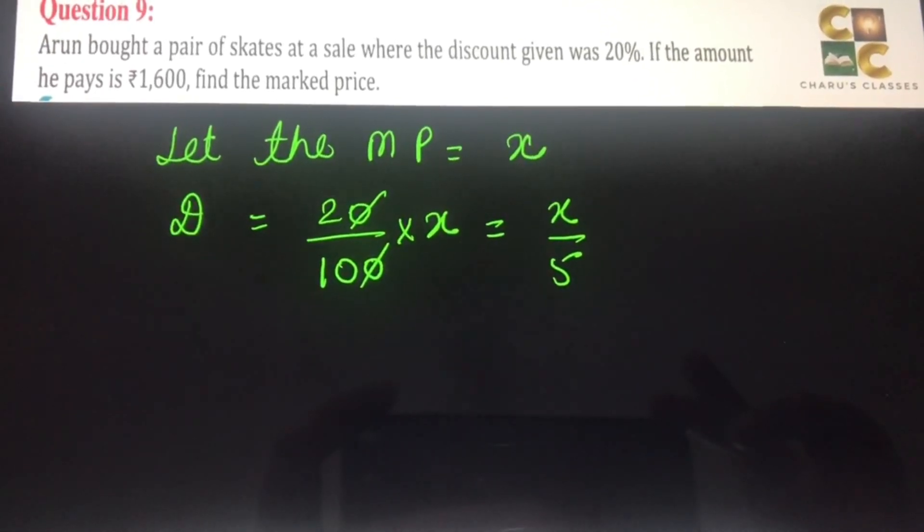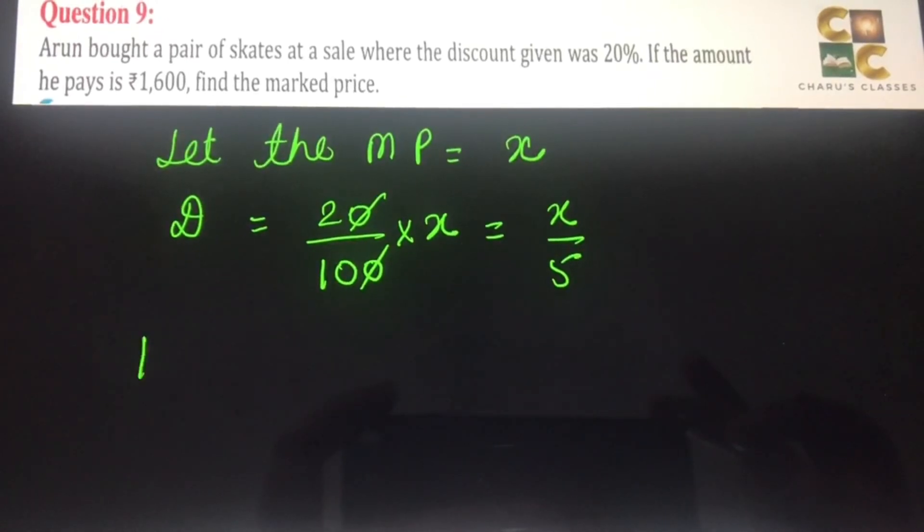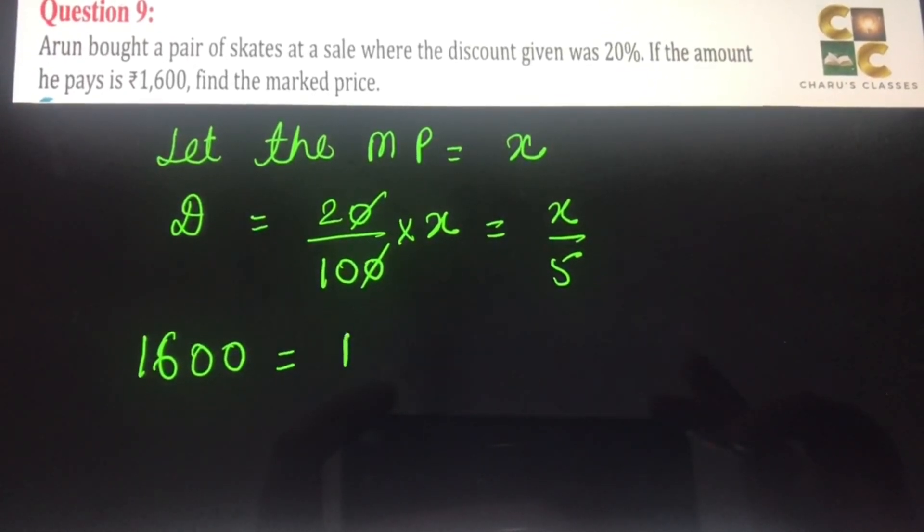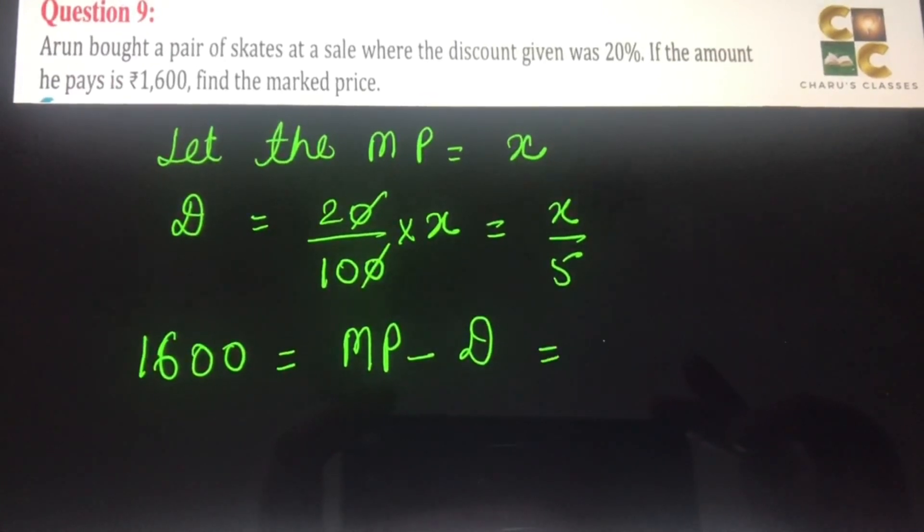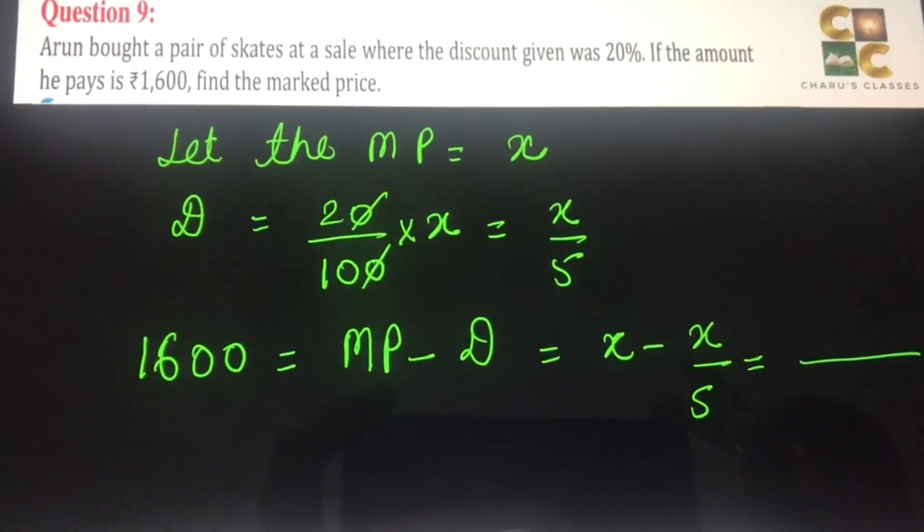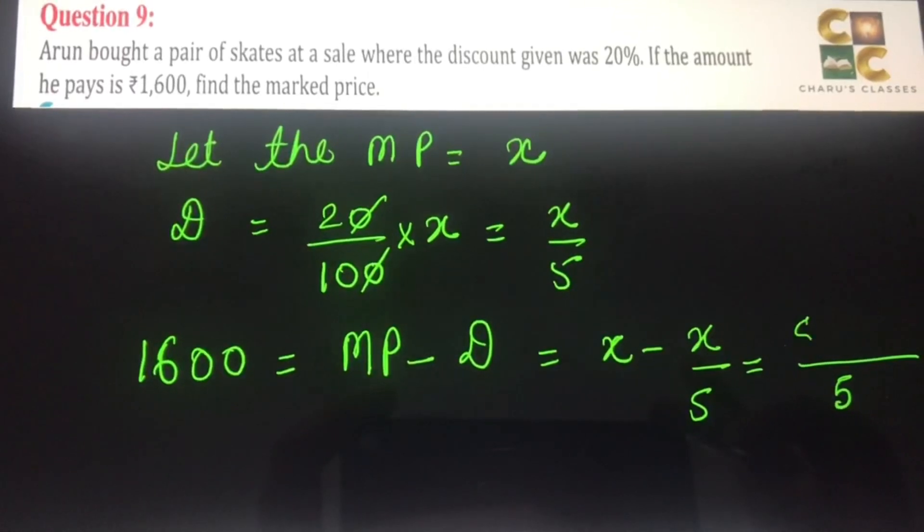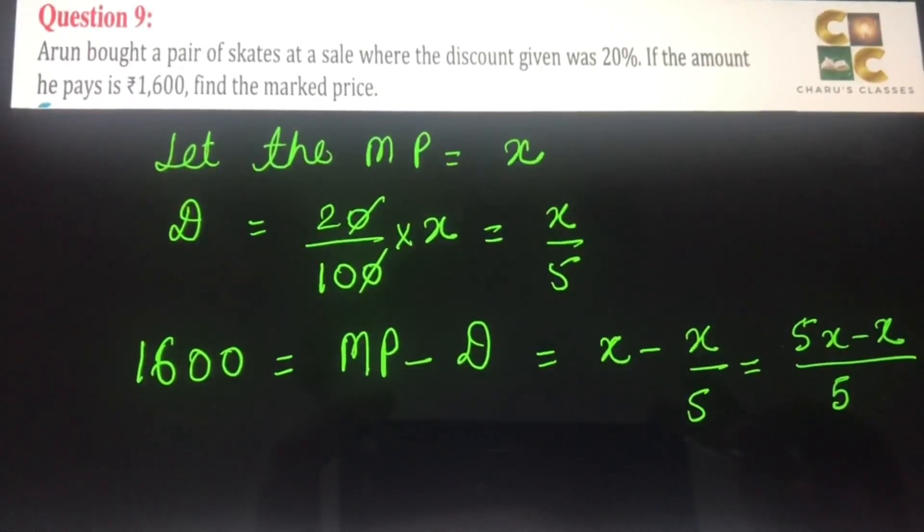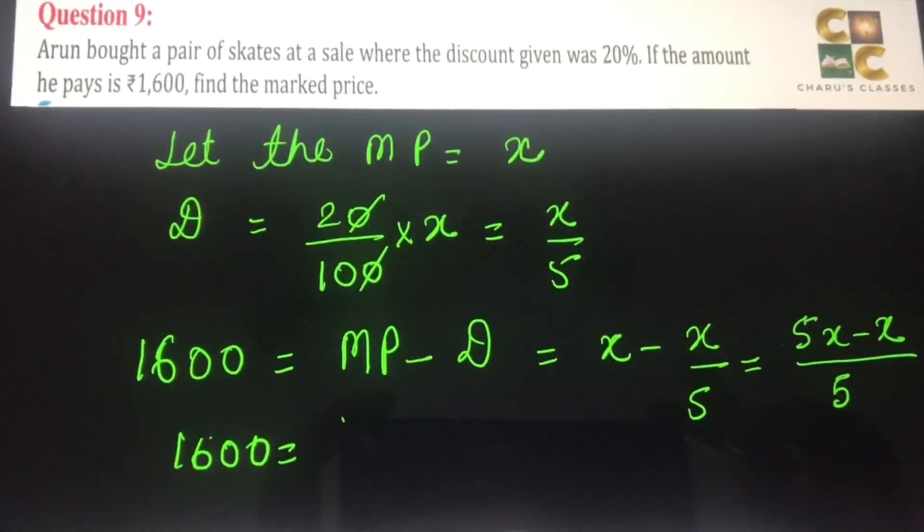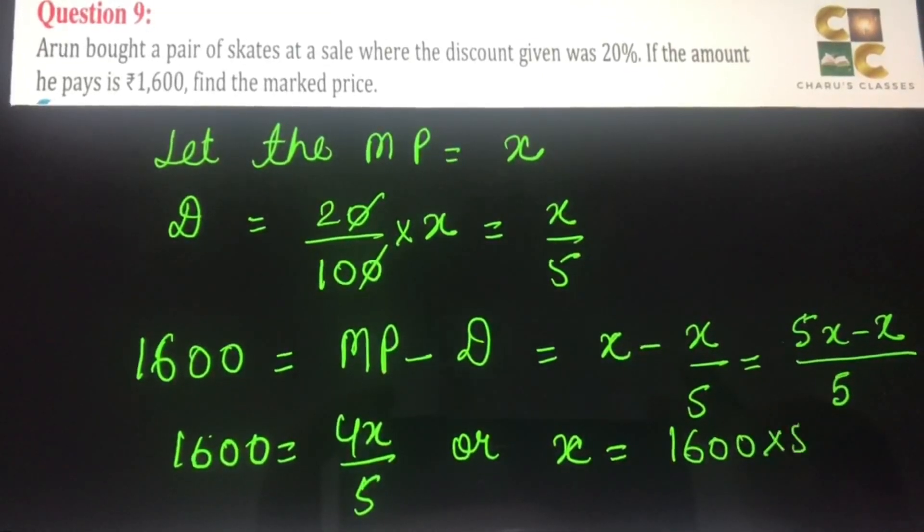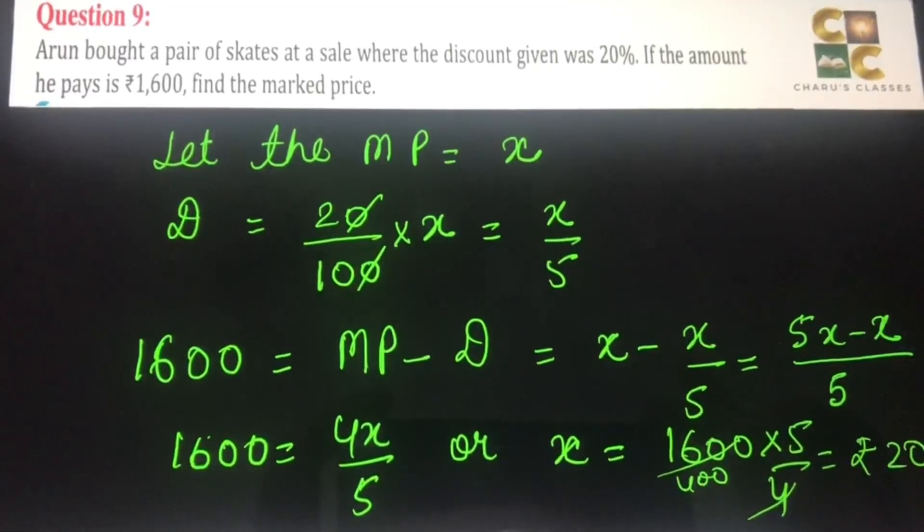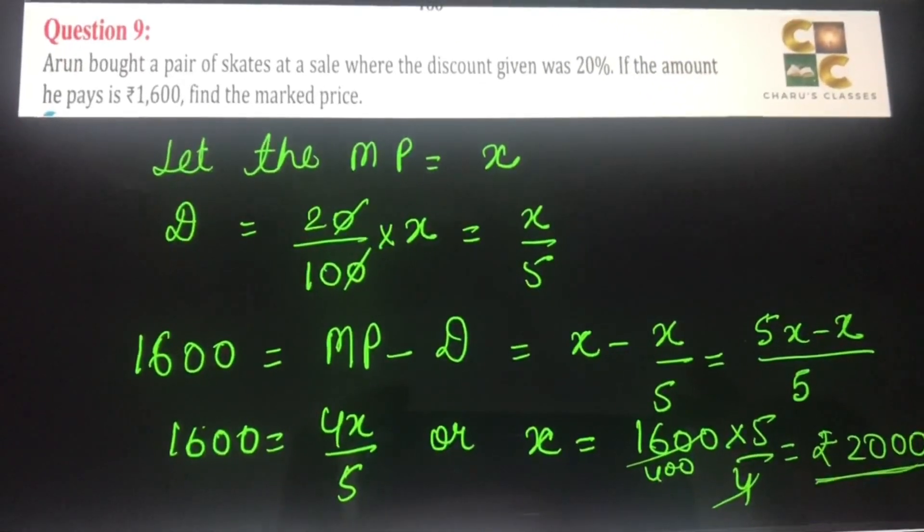Now the total amount paid is rupees 1600. So this rupees 1600 equals the marked price minus the discount. That equals X minus X by 5. We take 5 as the common denominator. 1600 equals 4X by 5. Then X equals 1600 times 5 by 4. That equals rupees 2000. So the mark price was rupees 2000 at the beginning.